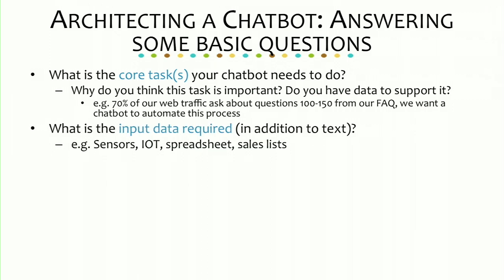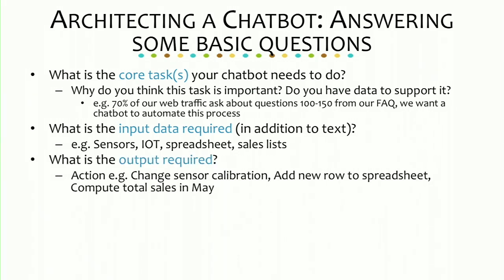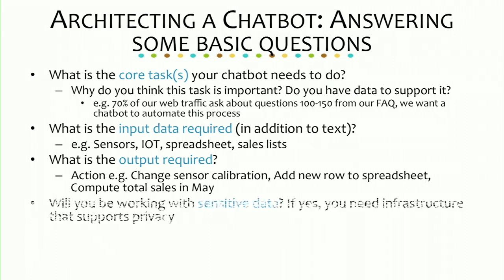What is the input data? The previous example needed connections to sensor data, scheduling of customer service representatives, and other things. What are all the inputs your chatbot needs to be connected to? What is the output — do you want to change a number on a spreadsheet, change a sensor, have sales projections? Will you be working with sensitive data? If so, you'll need more barriers, your own server with extra protection, HIPAA compliance for medical data, and others for financial data.